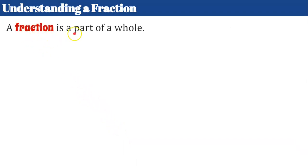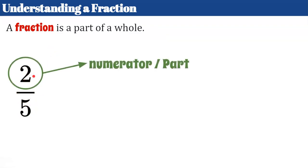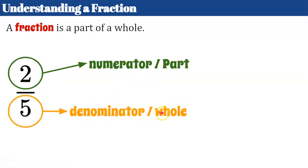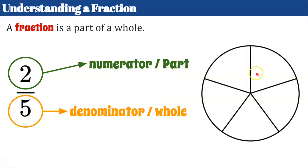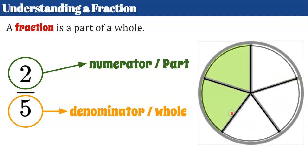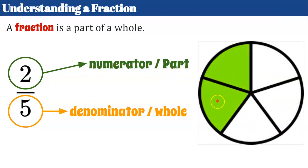Understanding a fraction is really important before we begin. A fraction is a part of a whole. When I look at the fraction two-fifths, remember this is two divided by five. Two is our numerator, which is our part. Five is my denominator, which is my whole. So we're saying two-fifths are two parts of a whole in five sections. If I look at a circle divided into five equal sections, the circle is my whole and each of these are my parts. If I'm talking about two parts, I'm going to shade in two, so this green area represents two-fifths of my circle.